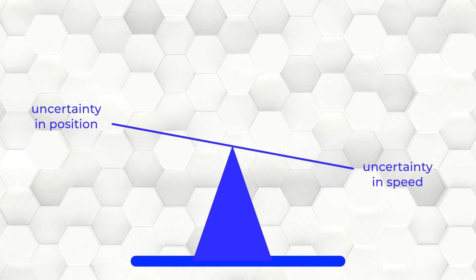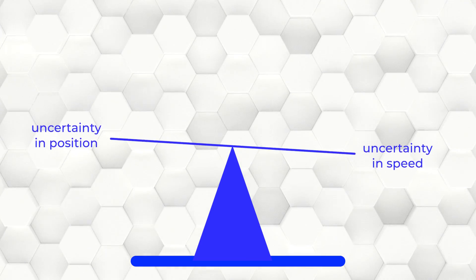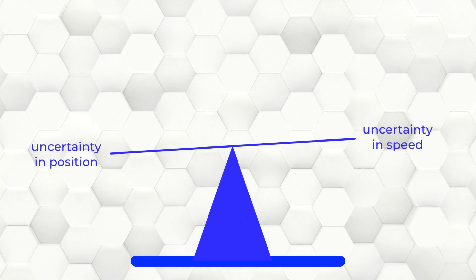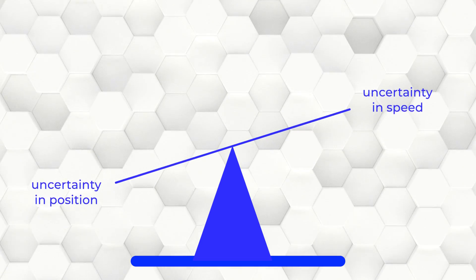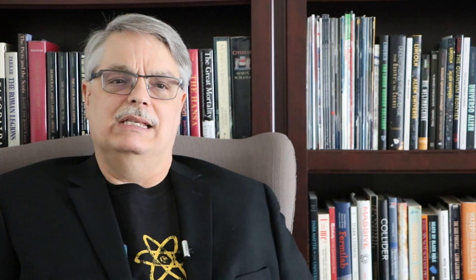The simplest description of the Heisenberg Uncertainty Principle says that it's impossible to simultaneously know an object's location and velocity. The more accurately you know the object's location, the less accurately you know how fast it's moving, and vice versa. It's like a teeter-totter, where when one side goes up, the other side goes down. This is just true.